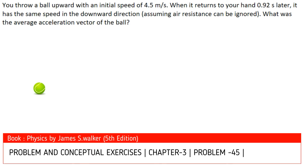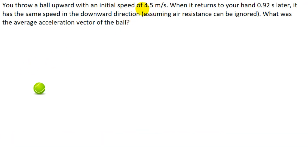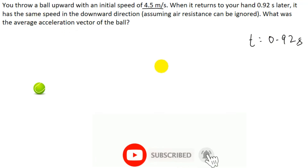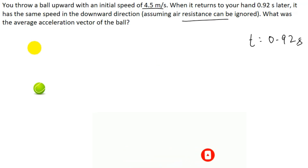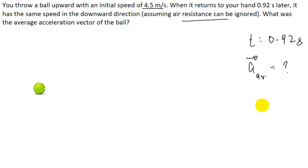In the next question, you throw a ball straight upward with an initial speed of 4.5 meters per second. After time t = 0.92 seconds, the ball returns with the same speed in the downward direction. Air resistance is ignored. We need to find the average acceleration. As soon as the ball leaves your hand, it is in free fall, so the answer is 9.81 meters per second squared downward — acceleration due to gravity.